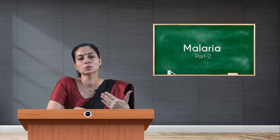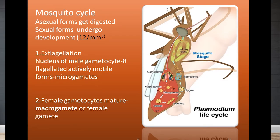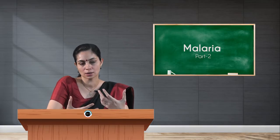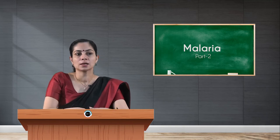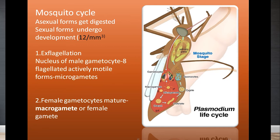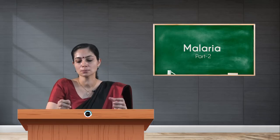The second part of the lifecycle is what happens in the mosquito. When a mosquito bites an infected patient and takes a blood meal, the malarial parasite enters the mosquito's body. The mosquito can take both asexual and sexual forms, but asexual forms get digested while sexual forms undergo development. A minimum of 12 malarial parasite gametocytes per cubic millimeter of blood is required to infect a mosquito. The micro-gametocyte undergoes ex-flagellation to form eight flagellated, actively motile forms called micro-gametes. The female gametocyte matures and turns into the macro-gamete.